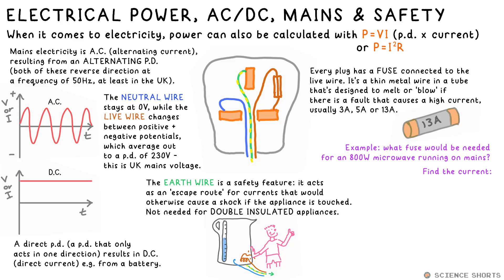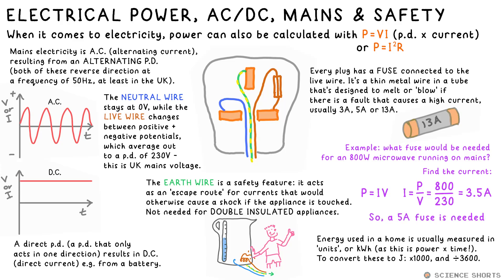Let's say a microwave draws 800 watts of power from the mains. What fuse would it need? We know PD or voltage is 230 volts because it's mains, so we rearrange P equals VI to get the current. So I equals P over V, that's 800 divided by 230, that gives us 3.5 amps. We can't use a 3-amp fuse, otherwise it would just blow under normal operation, so we go for the next one up, a 5-amp fuse. A 13-amp fuse would work as well, but the current would have to increase to that before it blows, and that could be dangerous.